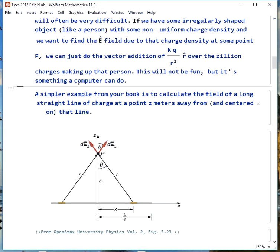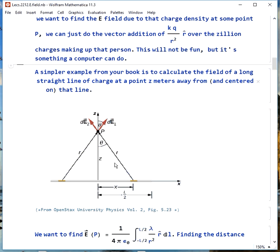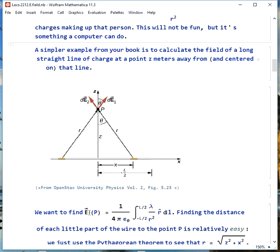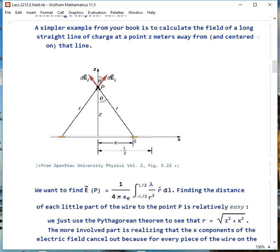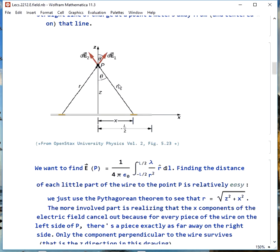We can use this for things that are much more symmetric than a person, though. So, one example from your book is to find the field of a long straight line of charge if you're some distance z away from and centered on that line. So we want to find the electric field at this point p, so we have to do our constant one over four pi epsilon naught, and then it's charge over r squared. Our charge here is lambda dl, there's our r squared, and r hat is of course our directional indicator. So we have to find the distance of every single little piece of wire, the distance between that and the point we're interested in. That's what's going to go in here. We need the Pythagorean theorem to see that this little r is square root of z squared plus x squared. So we can find the distance, and it's not too bad.